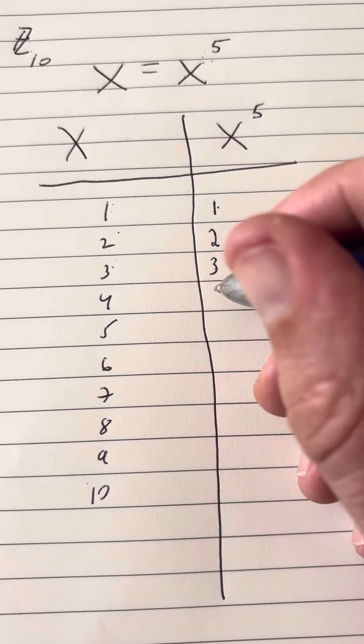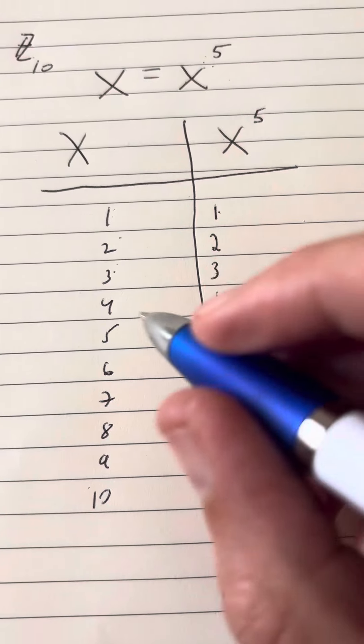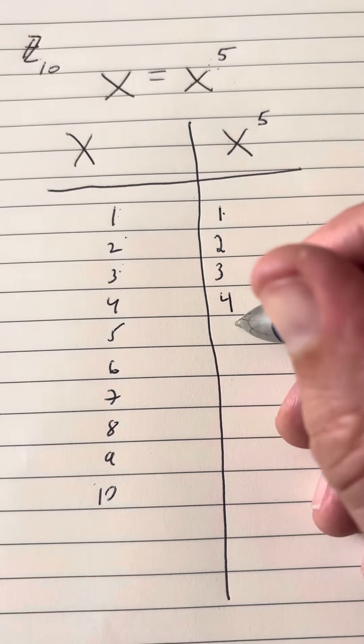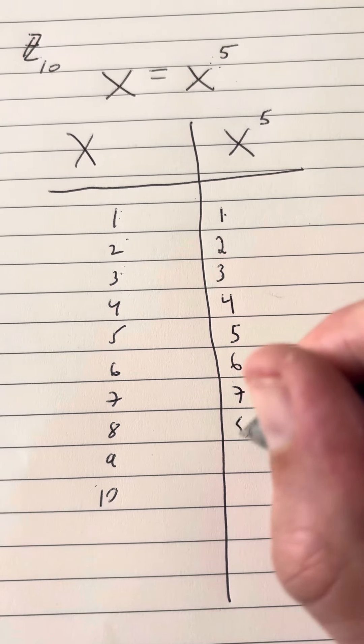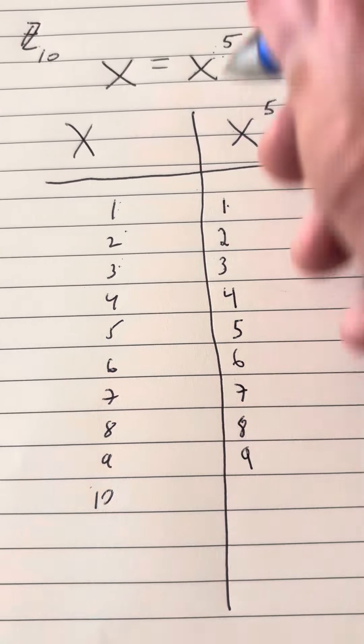3 to the 5th power is 243, which has a remainder of 3 when you divide that by 10. 4 to the 5th power is going to have a remainder of 4 when you divide that by 10. 5 to the 5th power is going to have a remainder of 5.